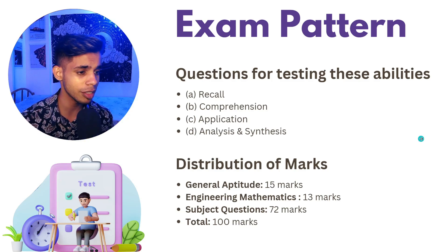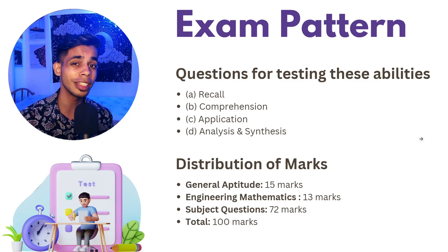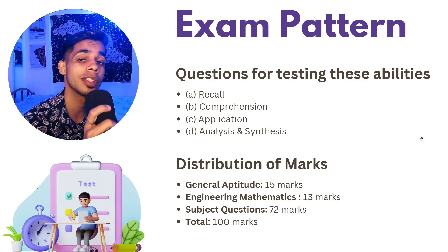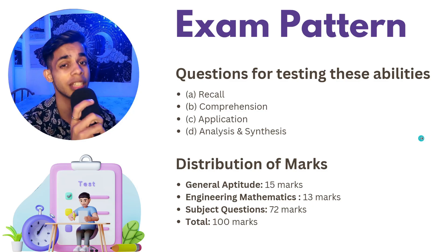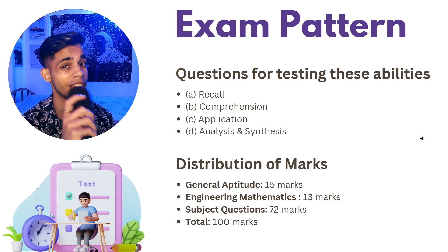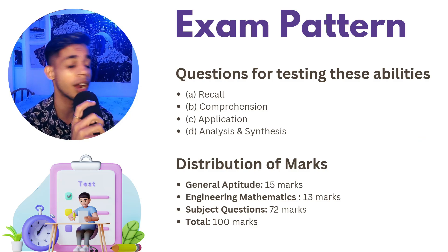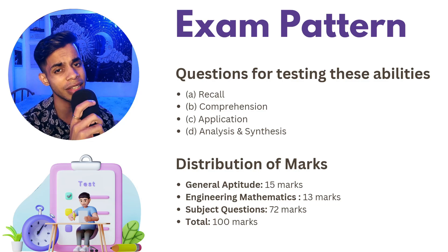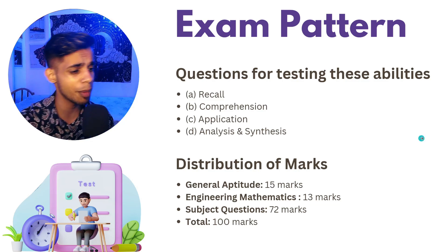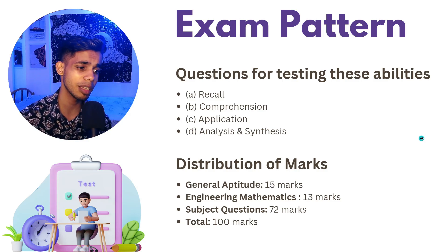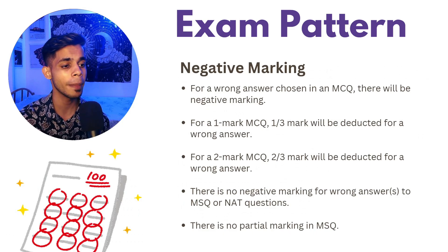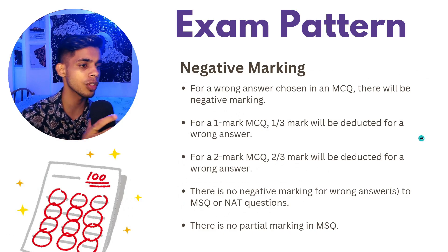Regarding the distribution of marks, general aptitude consists of 15 marks, engineering mathematics is 13 marks, and subject-specific questions account for 72 marks, totaling a 100-mark exam over three hours. This is important to keep in mind when planning your preparation strategy.